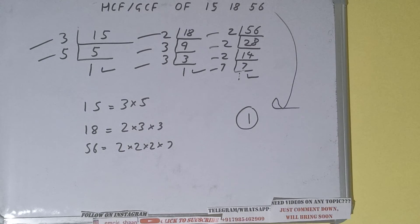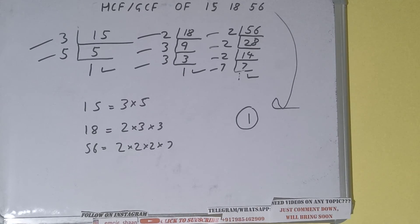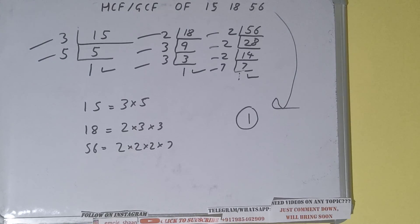When you get a case like this — where there are no common prime factors among all three numbers — the HCF or GCF will be 1. So the HCF or GCF of 15, 18, and 56 is 1. If you found the video helpful, please hit the like button, consider subscribing, and thanks for watching.